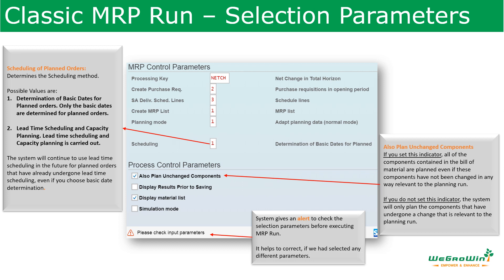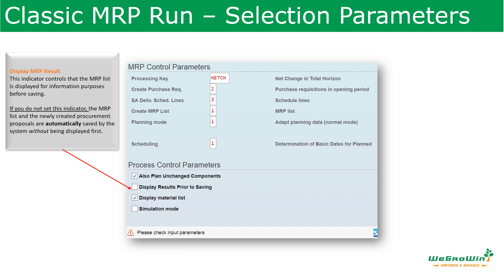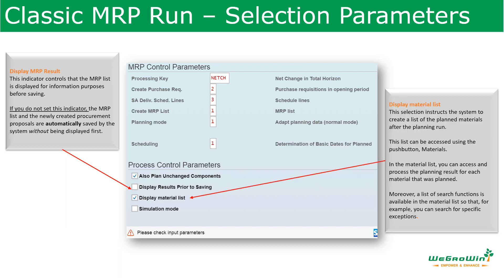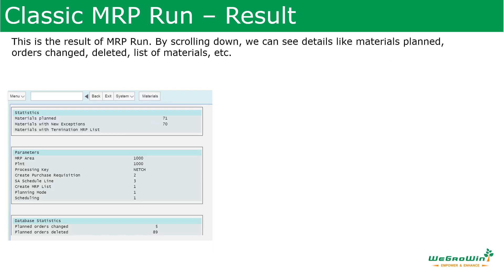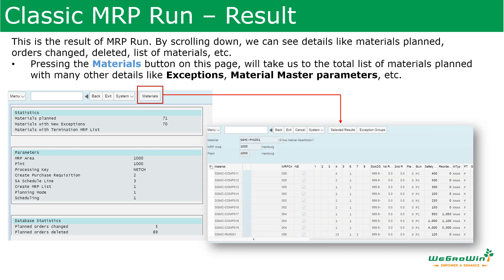After entering all these details, press Enter to proceed. The system will give an alert — check all the parameters carefully because the output depends on them. There is also an option to show the MRP results and to display the material list. By scrolling down, we can see details like materials planned, orders changed, deleted, and the list of materials. By pressing the materials button, it takes us to the list of materials planned, with exception materials and material master parameters visible.